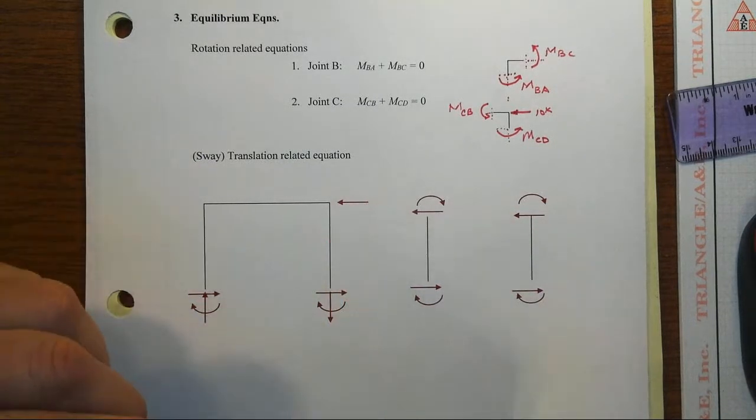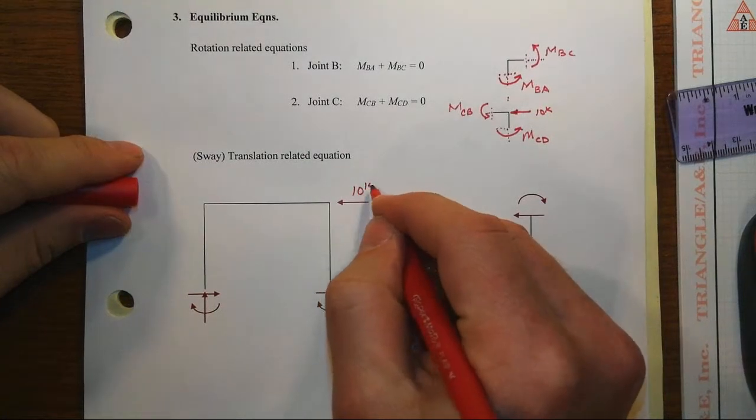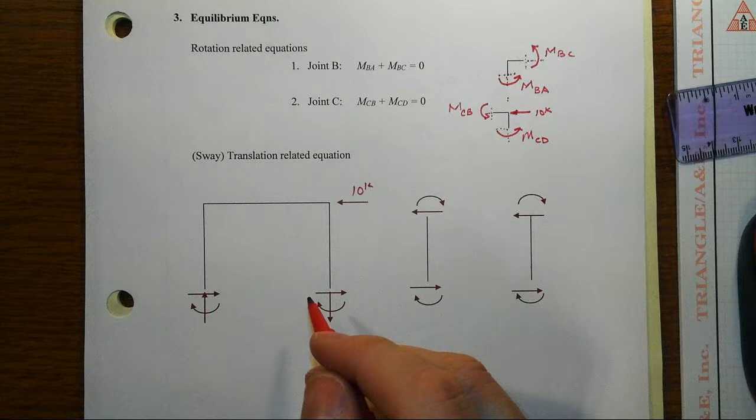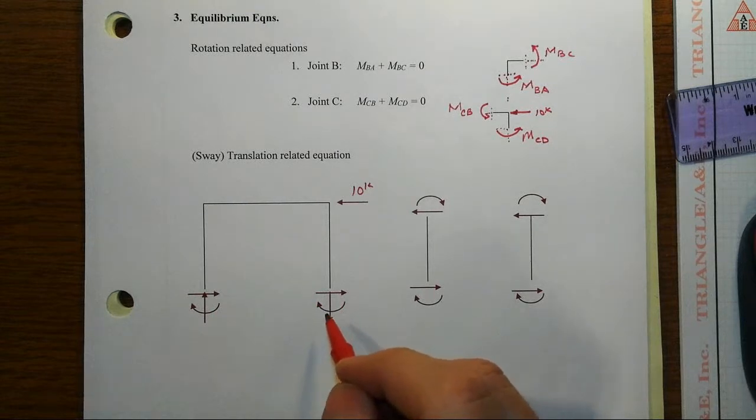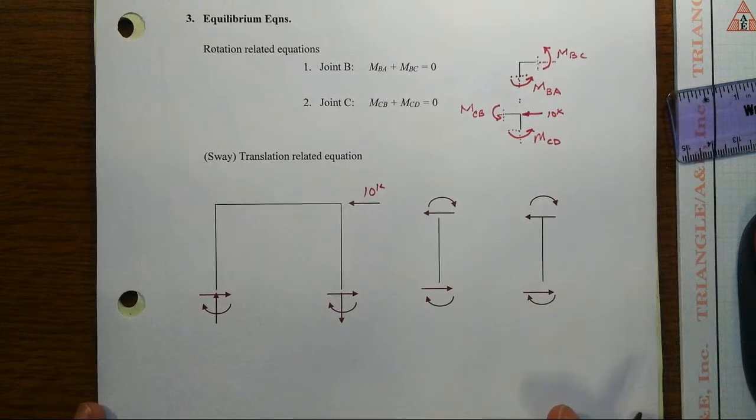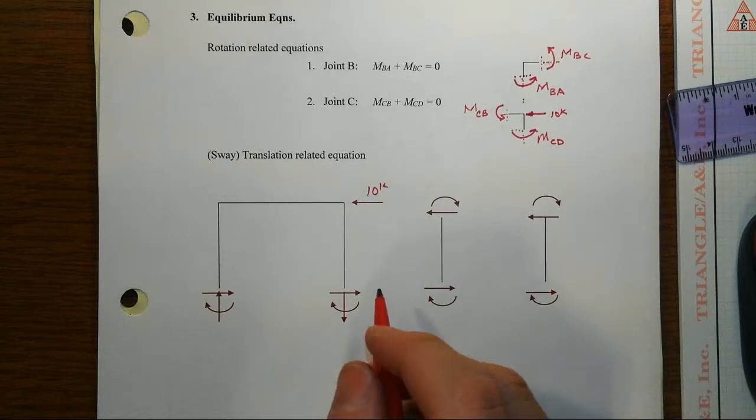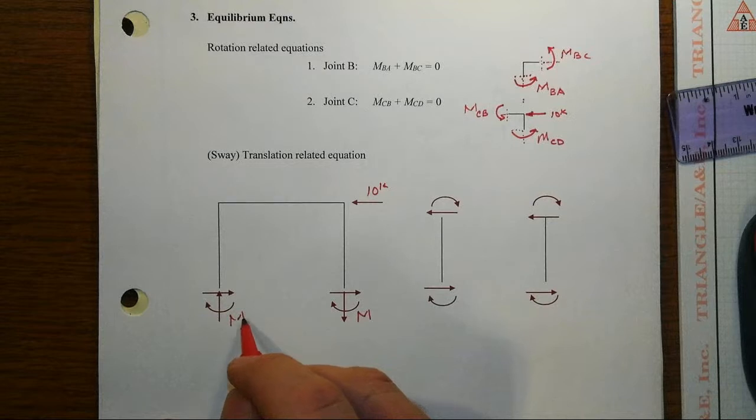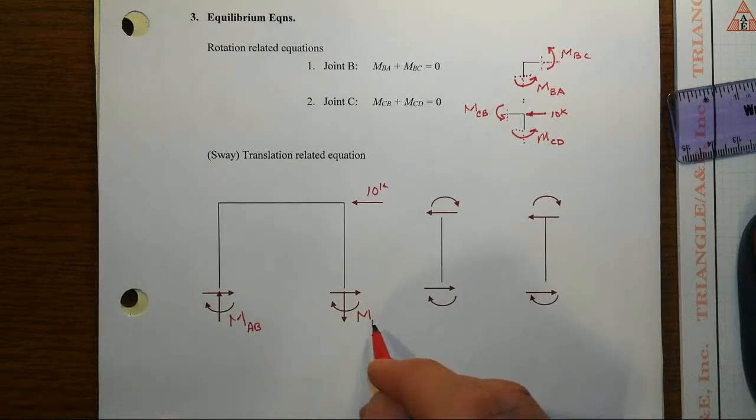We've got this lateral load of 10 kips that's being applied to the beam, and we're not going to make any assumptions like we might in the portal method about what happens. This is the linear elastic exact approach, so let's come down here and label these end moments.